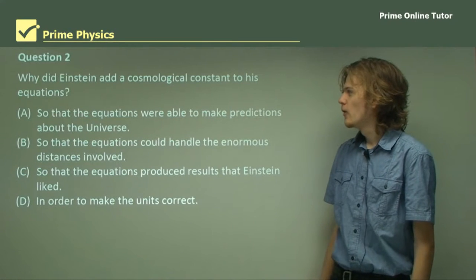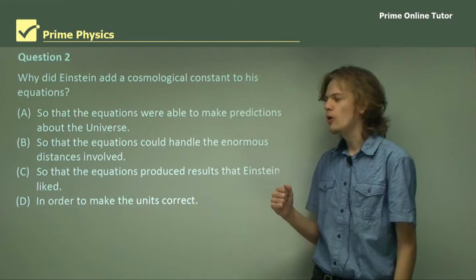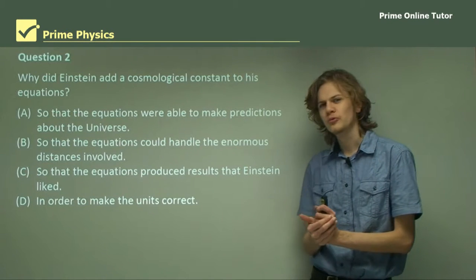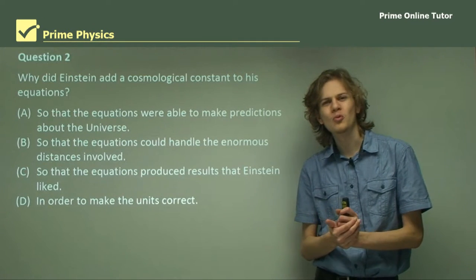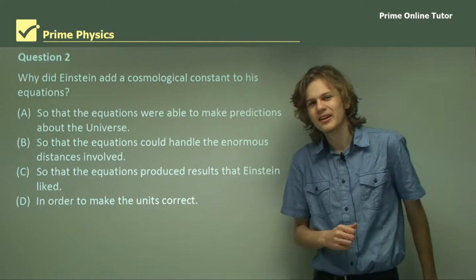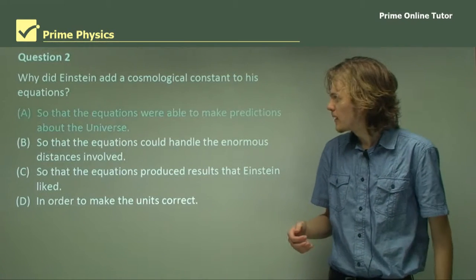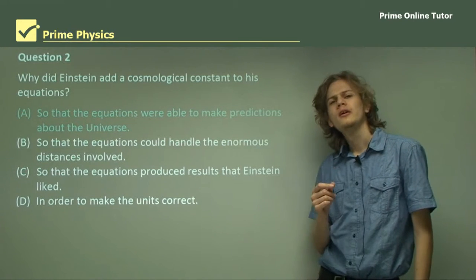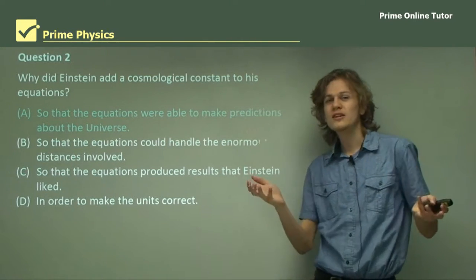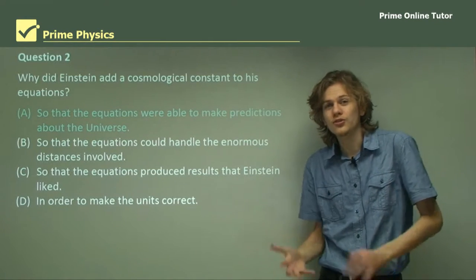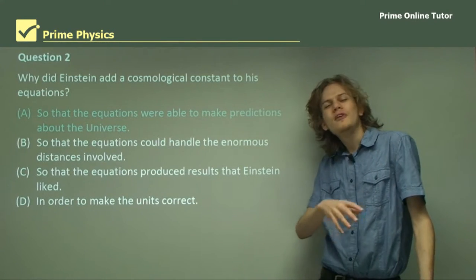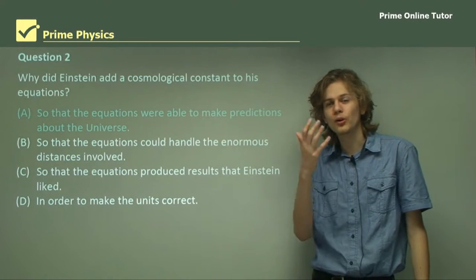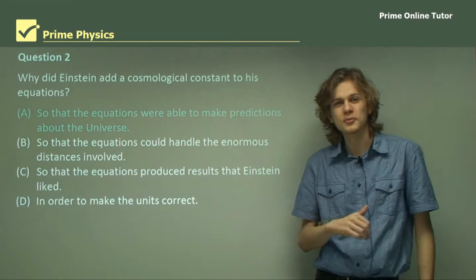Question two. Why did Einstein add a cosmological constant to his equations? Well, that depends on whether you can remember what the cosmological constant is. So let's go through the options. Is it A, so the equations were able to make predictions about the universe? Maybe the equations couldn't make predictions about the real world unless you added a cosmological constant. But in fact, this is not the right answer. They were perfectly capable of making predictions about the real world without adding in a cosmological constant.